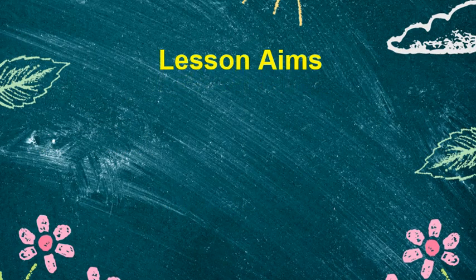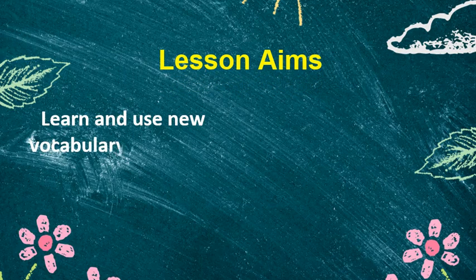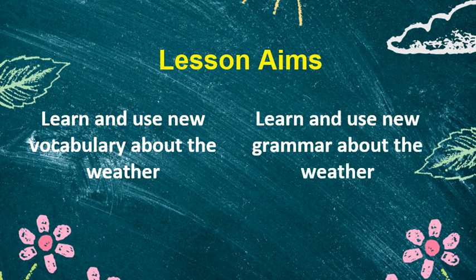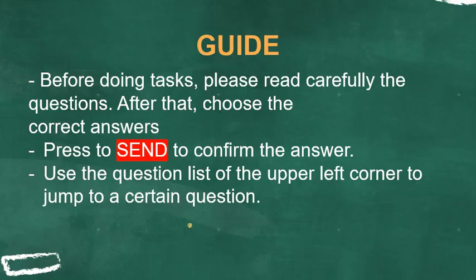Lesson objectives: 1. Learn and use new vocabularies about the weather. 2. Learn and use new grammar about the weather. Before doing that, please read carefully the questions. After that, choose the correct answer. Read to send to confirm your answer. Use the question list at the upper left corner to jump to a certain question.